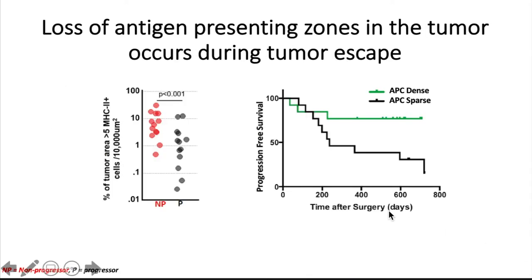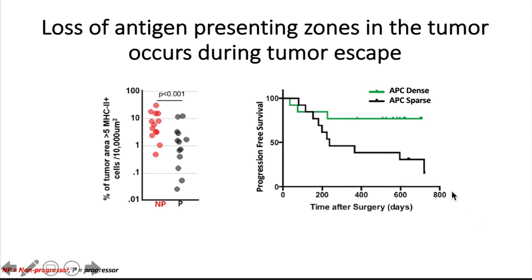When we scale this up to look at antigen-presenting cell density across a larger cohort of patient tumors, we can see that patients without progressive disease have a significantly higher proportion of their tumor tissue with high antigen-presenting cell density, whereas patients with progressive disease lack this same level. Similarly, patients with antigen-presenting cell dense tumors have significantly improved progression-free survival. Put simply, this suggests that the loss or absence of antigen-presenting zones in tumors occurs during tumor escape, and that these antigen-presenting niches are critical for maintaining the antitumor T-cell response, which helps control disease and promote patient survival.